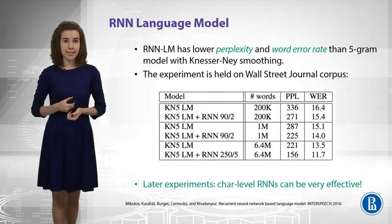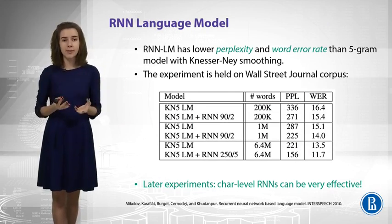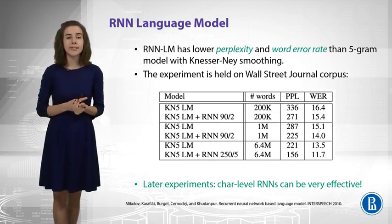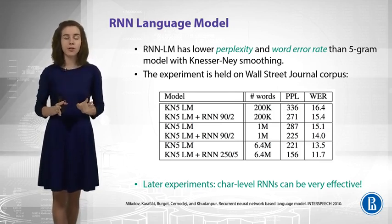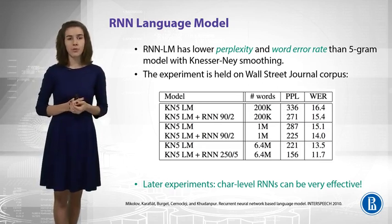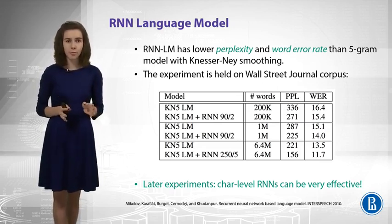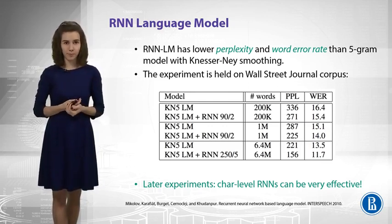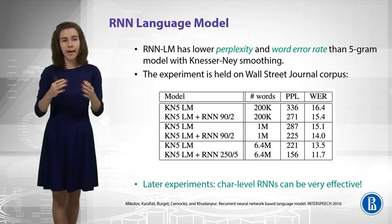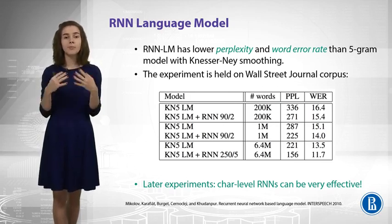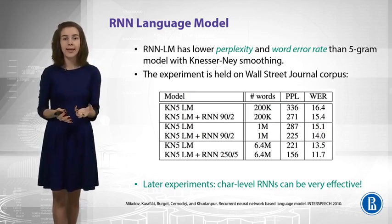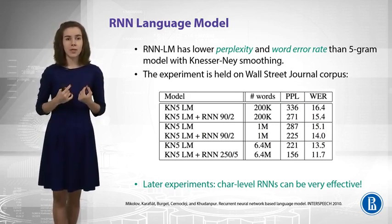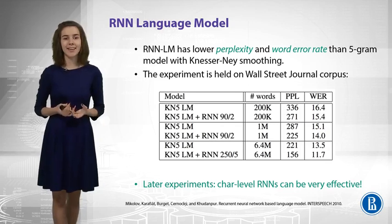Now I want to show you an experiment that compares this recurrent neural network model with Kneser-Ney smoothing language model. This is a 5-gram language model. You can see that when we add recurrent neural network here, we get improvement in perplexity and in word error rate. This says that recurrent neural networks can be very helpful for language modeling.